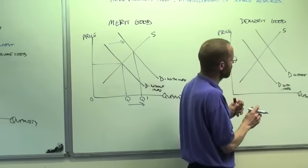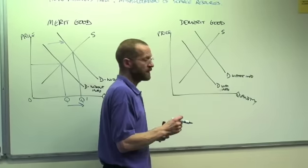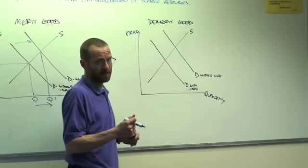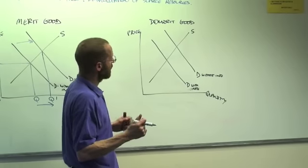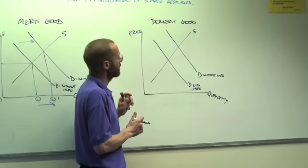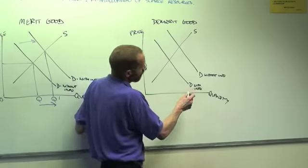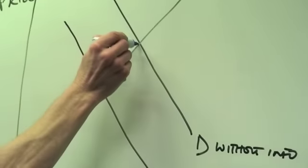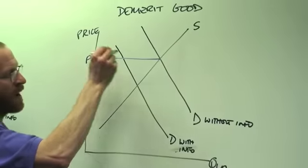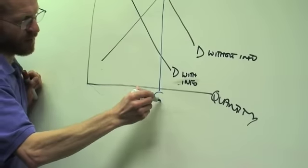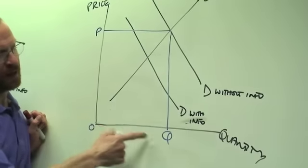The opposite is true of a demerit good. A demerit good is a good which is worse for somebody than they know about because they suffer information failure. Without information, the equilibrium would be where supply is equal to demand at OP and OQ.